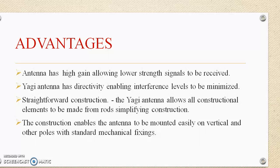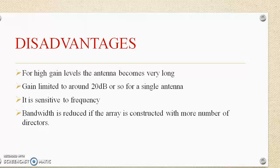Some advantages of the Yagi antenna: it is a high-gain antenna and we can increase the strength of signals received. Its directivity enables interference levels to be minimized. It is easy to construct — the Yagi antenna allows all construction elements to be made from rods, simplifying construction, and enables the antenna to be mounted easily on vertical and other poles with standard mechanical fixings. Some demerits: for high gain levels the antenna becomes very long; gain is limited to around 20 dB for a single antenna; it is sensitive to frequency; and bandwidth is reduced if the array is constructed with more directors.